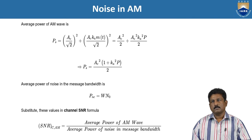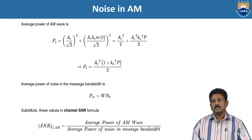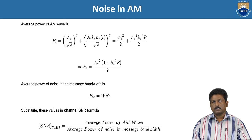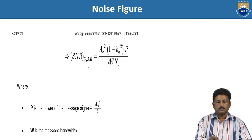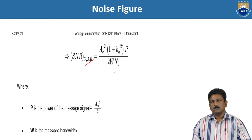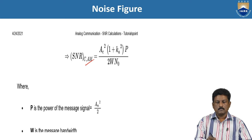So the total power PS = AC²(1 + KA²·P)/2. The overall average power of the noise in the message bandwidth is also calculated. Combining these two, we get the channel SNR for AM modulation: SNR(C)_AM = AC²(1 + KA²·P) / (2·W·N₀), where P is the power of the message signal m²(t)/2, and W is the message bandwidth, so 2·W·N₀ represents the noise power in the bandwidth.